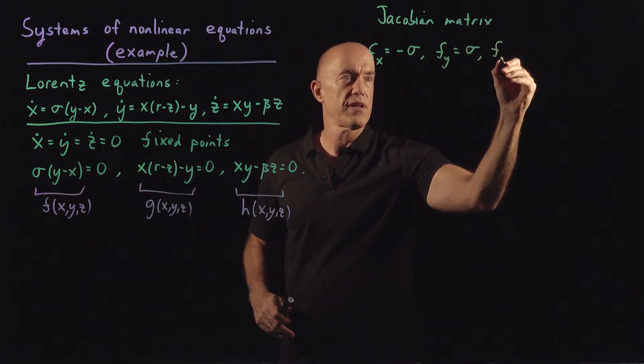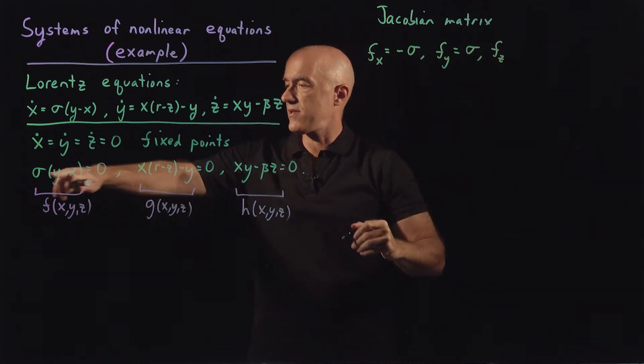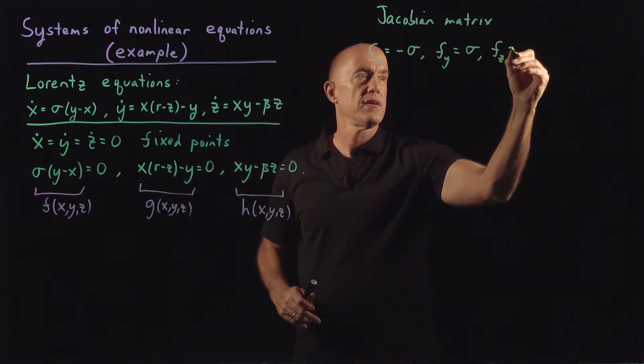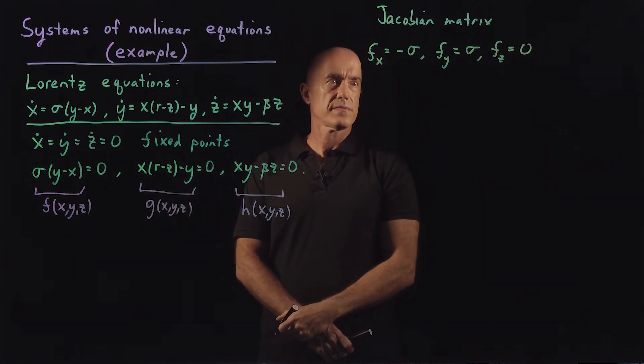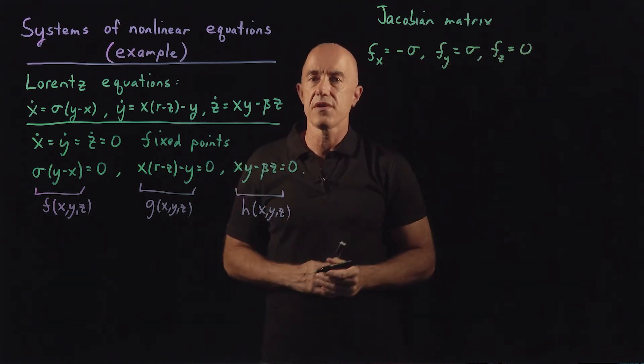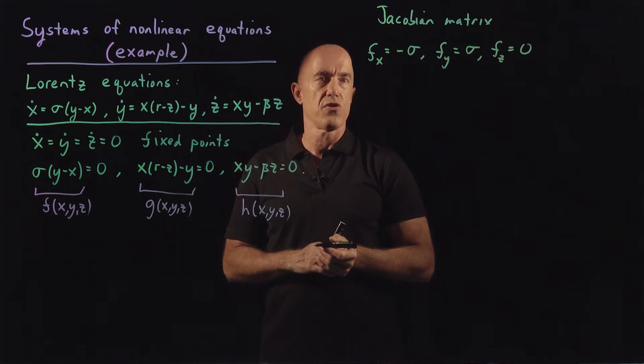So the partial of f with respect to x is going to be minus sigma. The partial of f with respect to y is going to be sigma. And the partial derivative of f with respect to z, there's no z dependence here, so that's zero. This will be the first row of our Jacobian matrix.